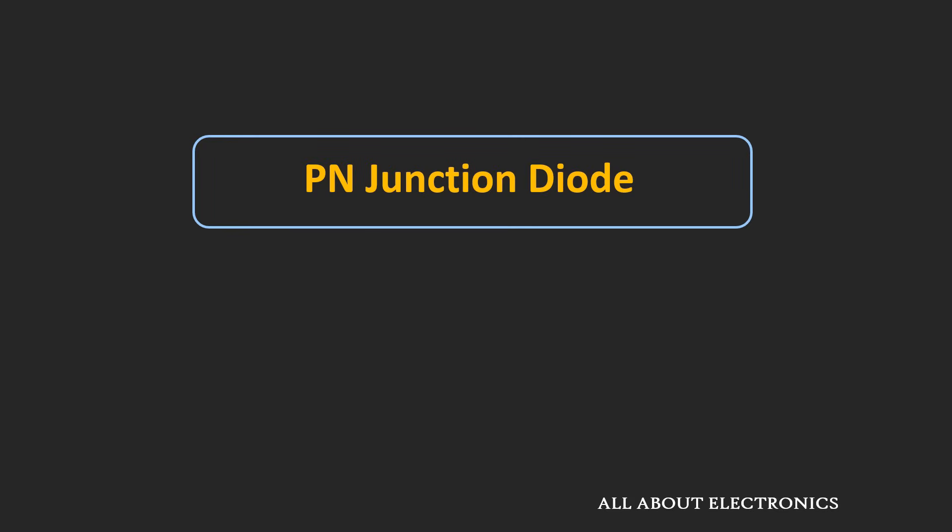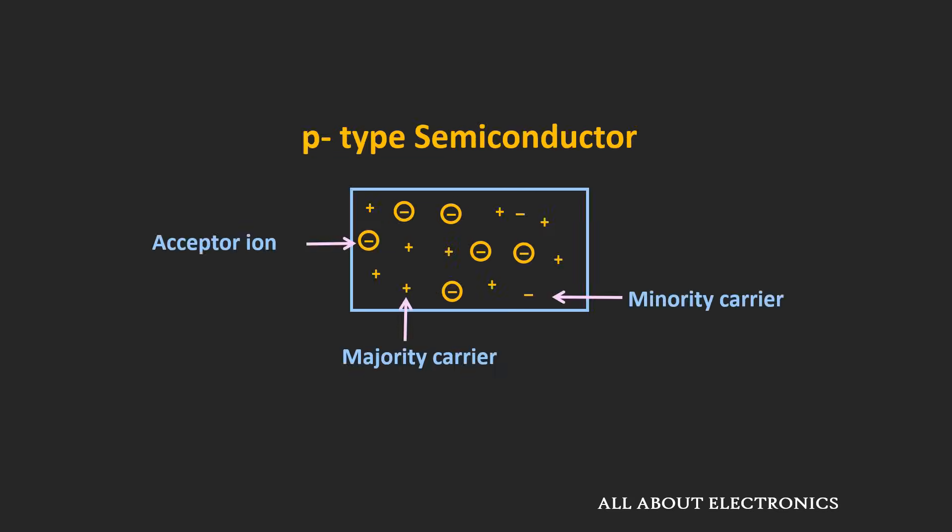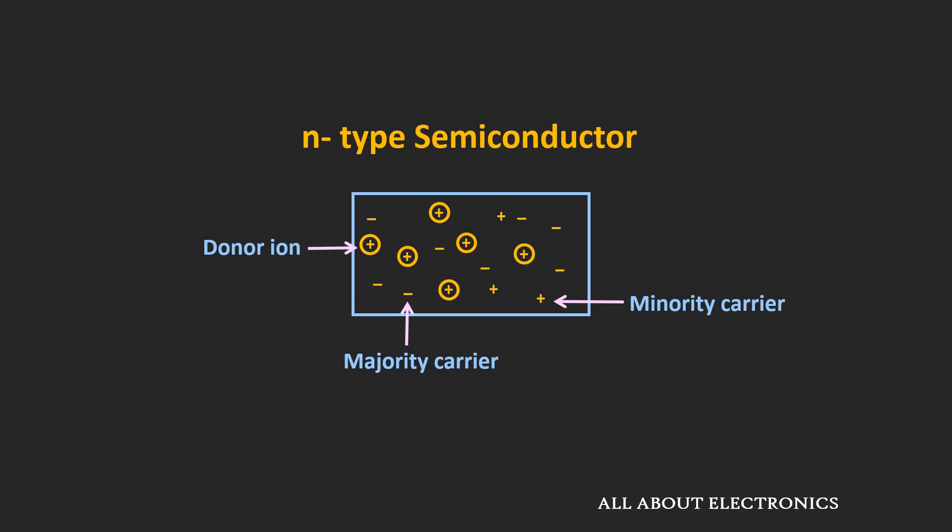Hey friends, welcome to the YouTube channel all about electronics. In the previous video, we have seen what is p-type and n-type semiconductors. In a p-type semiconductor, the holes are the majority carriers and electrons are minority carriers, while in an n-type semiconductor, the electrons are majority carriers and holes are minority carriers.